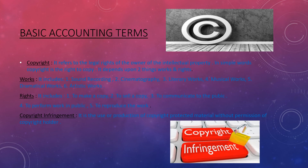In copyright, two things are very important: the works and the rights. There are six types of works. The first is sound recordings — such as singing, voice, sound effects, etc. The second is cinematography — visual recordings such as films, videos, etc.